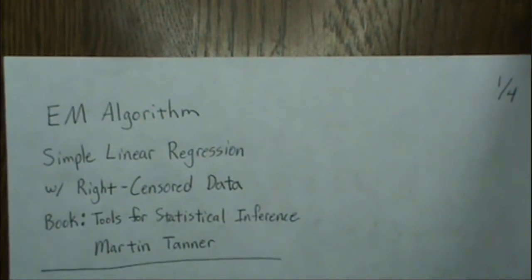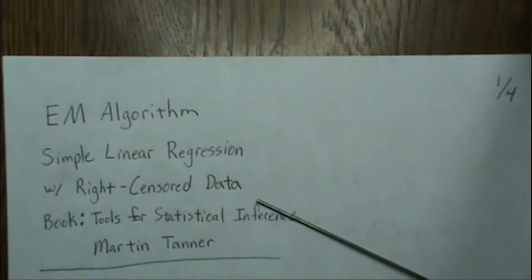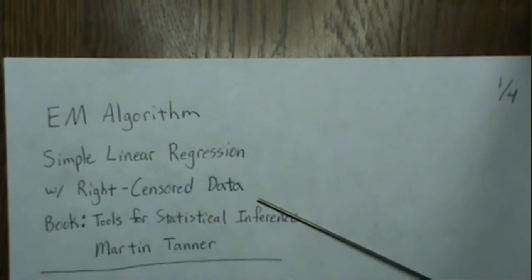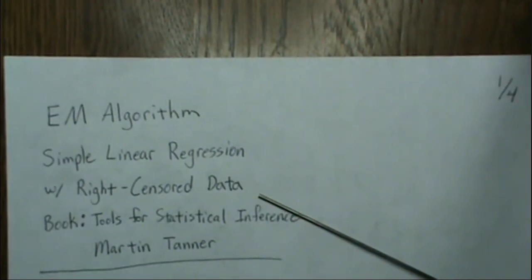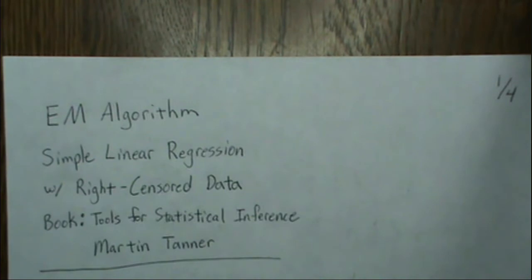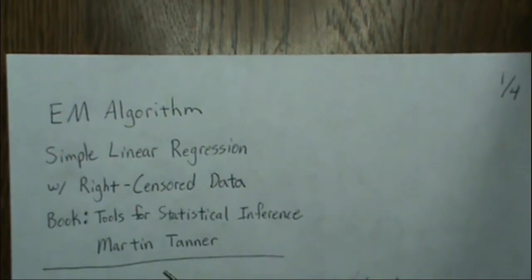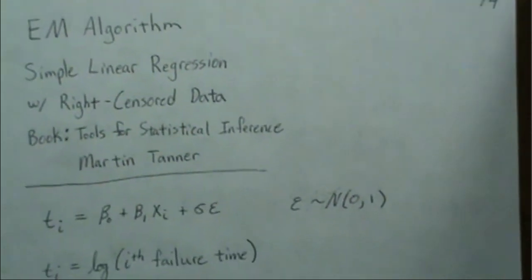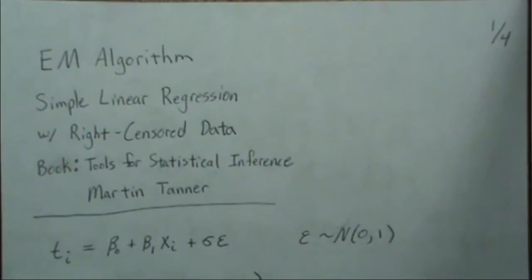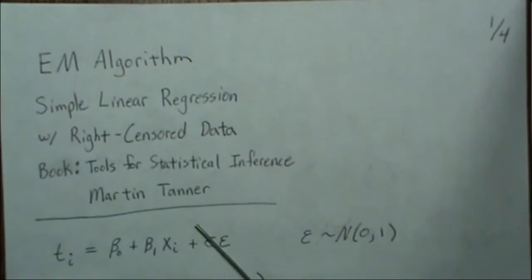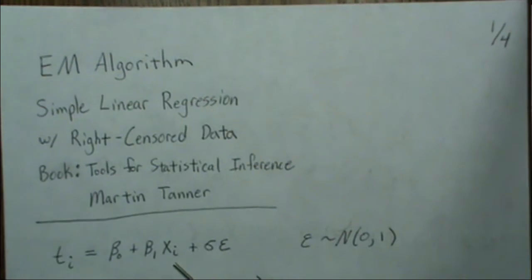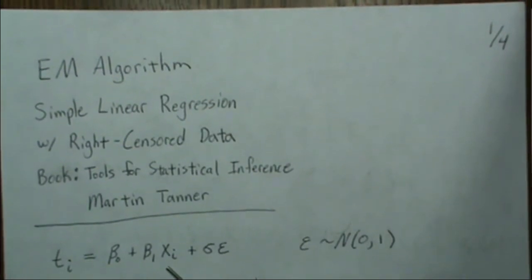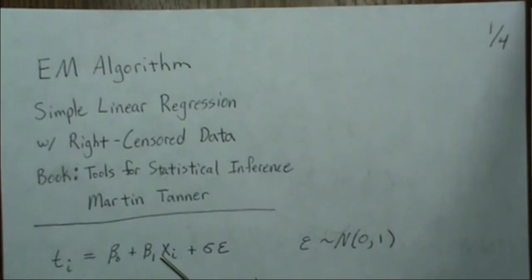Here we're going to look at the EM algorithm for simple linear regression with right-censored data. This is taken from an example out of the book 'Tools for Statistical Inference' by Martin Tanner. We're going to do a simple linear regression where X is the independent variable and Y is time.